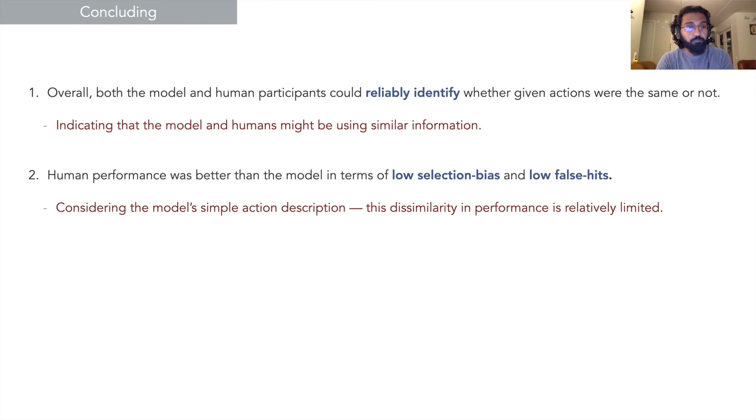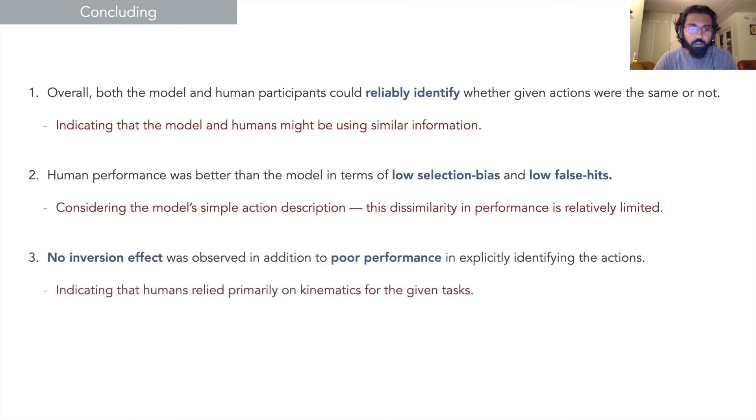Considering the model's simpler action description, this dissimilarity in performance is relatively limited. For the humans, it seems like they relied primarily on kinematics for the given task, as we saw no inversion effect in addition to poor performance in the second experiment.